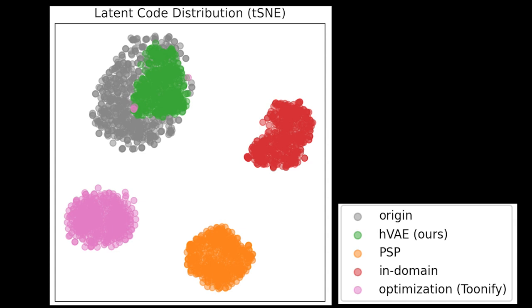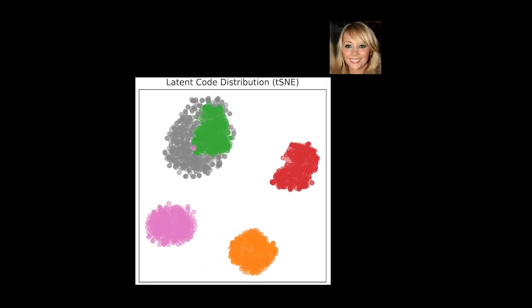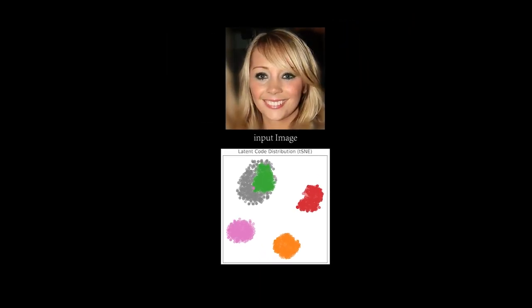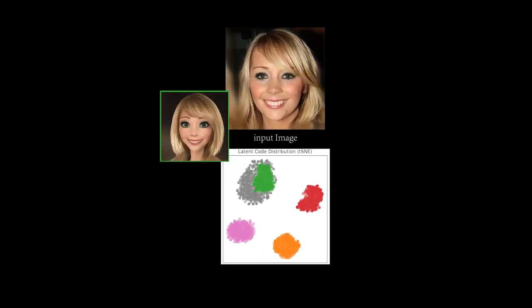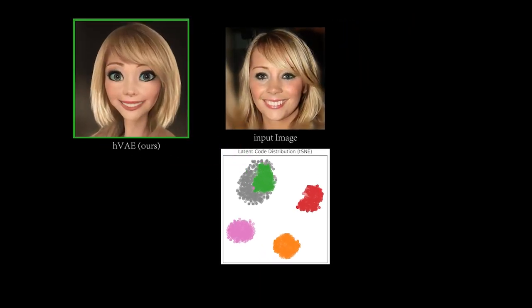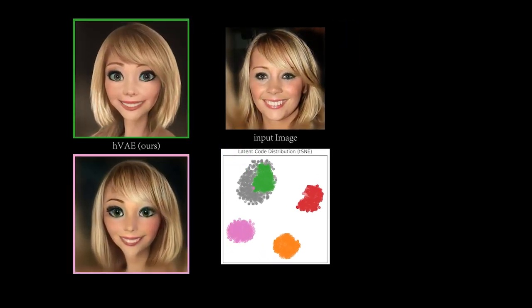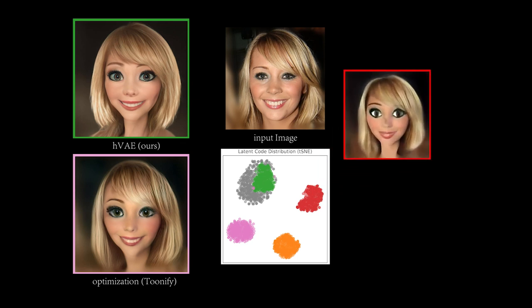Our key insight is that we do not in fact want to find the best inversion mapping for recreating real images, but rather the mapping that is robust to different styles.